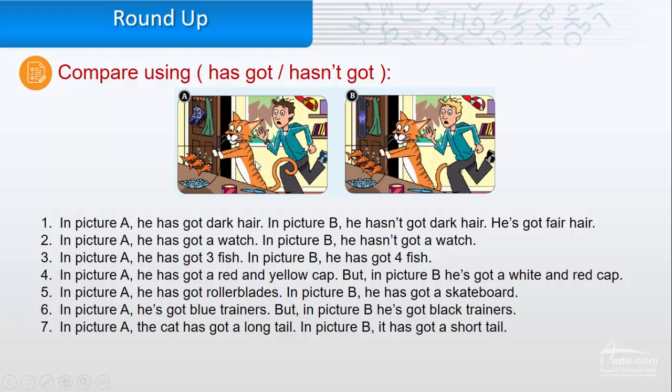Six, in picture A, he's got blue trainers. But in picture B, he has got black trainers. Seven, in picture A, the cat has a long tail. In picture B, it has got a short tail.